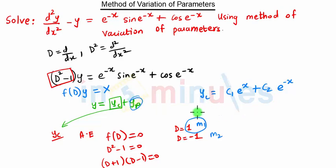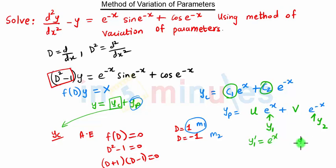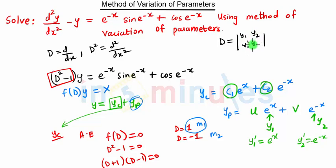Now we find yp. Since we are using the method of variation of parameters, yp has the same form as yc but with u and v instead of c₁ and c₂. So y₁ = e^x and y₂ = e^(-x). The derivative of y₁ is y₁' = e^x and the derivative of y₂ is y₂' = -e^(-x).